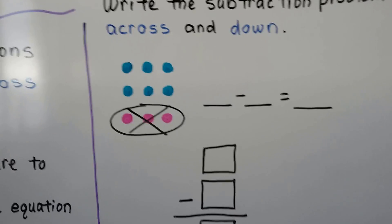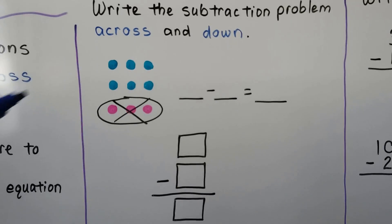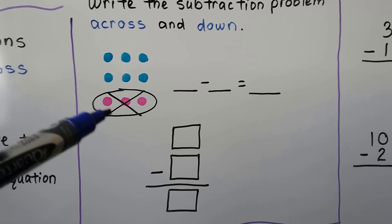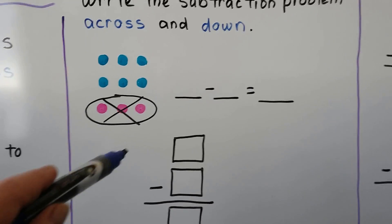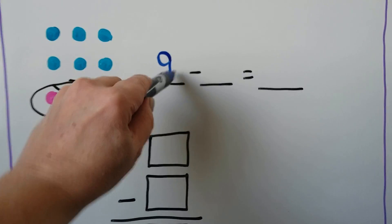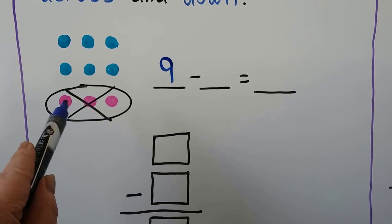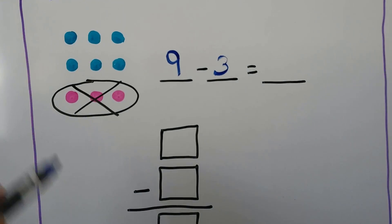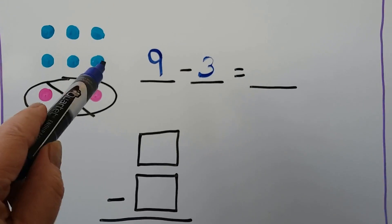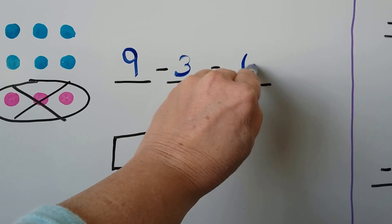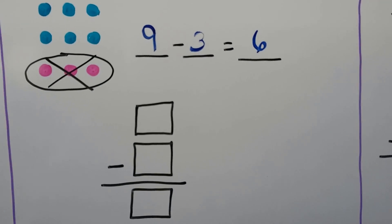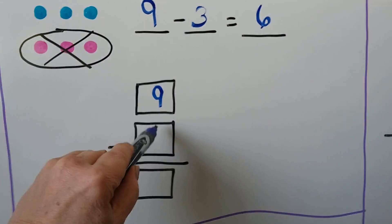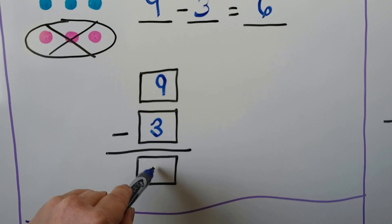We can write the subtraction problem across and down. We count how many dots are in all — there are nine dots in all. How many are crossed out? Three. How many are left? Six. We can also write it going down: nine minus three is equal to six.